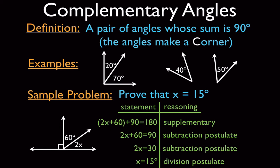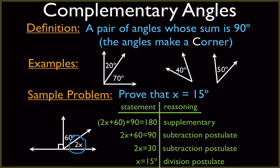One thing you often need to do is find the actual measure of the angle, not just x. If I ask you to find the measure of the angle, the answer is not just x equals 15 — the measure is what the expression equals. We plug in x equals 15: 2 times 15 is 30 degrees. So I would label that as 30 degrees. We're using x as a means to solve, but I also want to know the actual degrees of that angle.